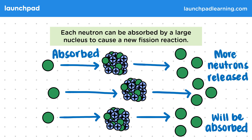Each neutron is capable of being absorbed and causing another fission reaction. This process continues until all of the fissile nuclei — which are the nuclei capable of undergoing fission — have split and released neutrons. You may be asked to recall this process for your exams, or explain how a single neutron can cause multiple reactions.